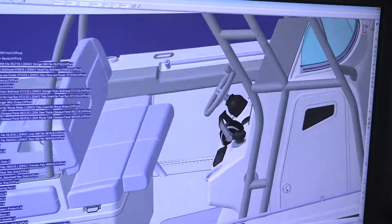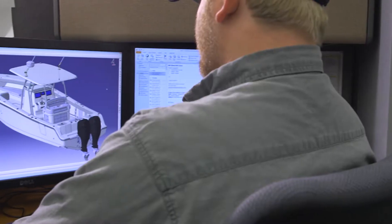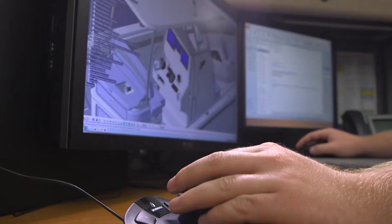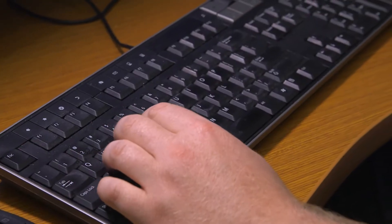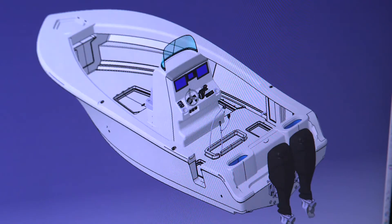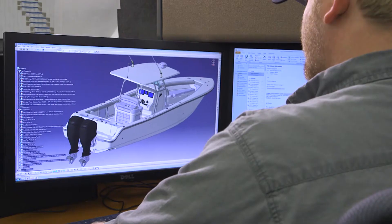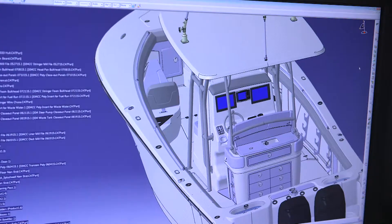Mako Boat Design starts with the latest in computer-aided design or CAD technology. This enables precision at every stage of construction, resulting in better fit, quality, and high consistency in the end product.